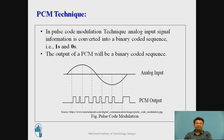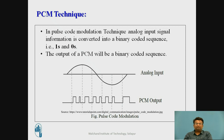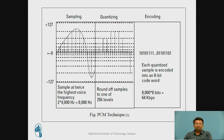The PCM technique is used for audio compression. In pulse code modulation, the analog input signal is converted into a binary coded sequence — that is, 1s and 0s. The output of PCM will be a binary coded sequence. There are three main steps in PCM: sampling, quantizing, and encoding.